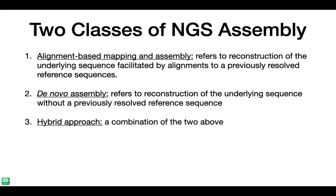There are two classes of assembly. The first is alignment-based mapping, where you have a reference and you find positions where your sequence reads map onto that reference — think of it as a map. The second is de novo assembly, where you have no reference and the matching is done among the reads themselves, with no guide or map to place the reads as you assemble.